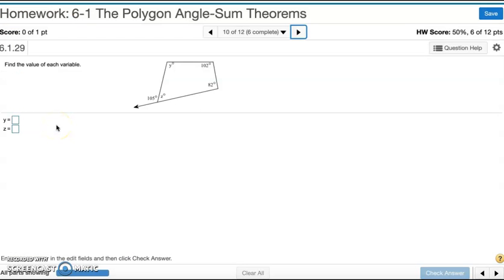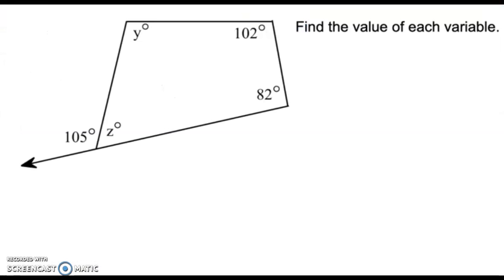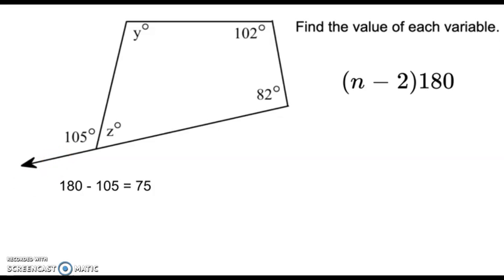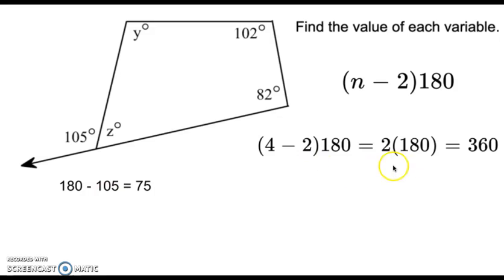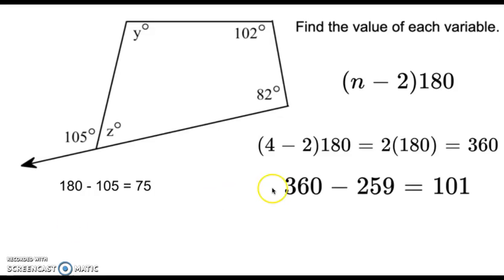Number ten: find the value of each variable. First I can find z, because 105 and z are a linear pair. So 180 minus 105 gives z equals 75. To find y, I need to find what all four angles add up to using n minus 2 times 180. With four sides, that's 4 minus 2 times 180, which is 360. Adding 102, 82, and 75 gives 259, and 360 minus 259 equals 101. So y is 101 and z is 75.